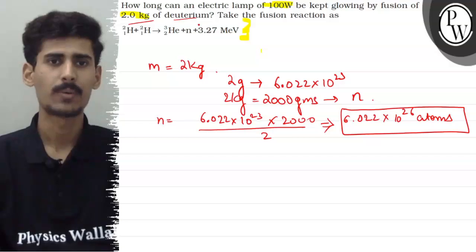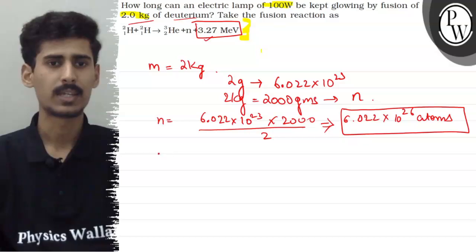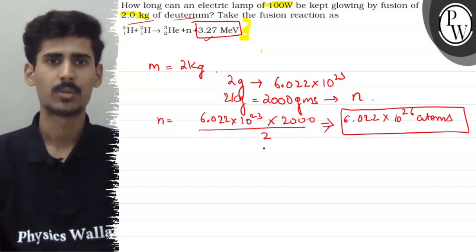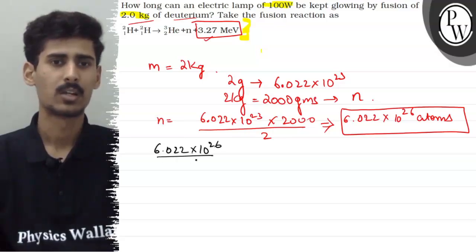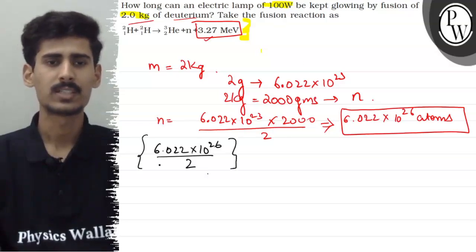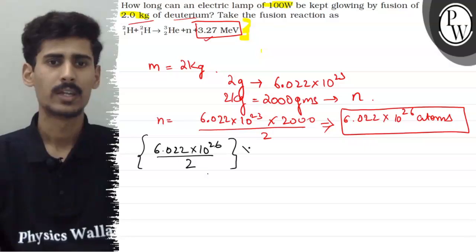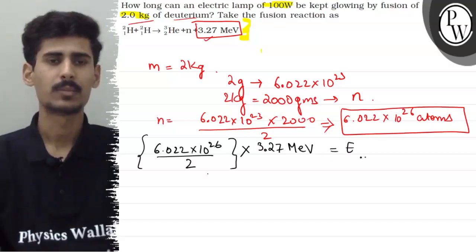If we see the fusion of all these atoms, the energy released is 3.27 MeV. So from the fusion of 2 deuterium atoms, this much energy is liberated. Basically, we can write that from 6.022 into 10 raise to the power 26 atoms, the energy liberated will be 6.022 into 10 raise to the power 26 divided by 2, because 2 deuterium atoms are used in this fusion, into energy liberated which is 3.27 MeV.